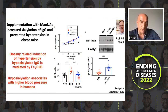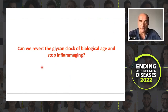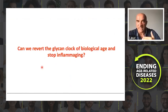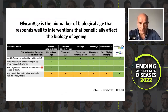In humans, we only have correlation data, which says that people with lower sialylation will have higher blood pressure. So the key question is: can we revert it? Can we make decisions to change our glycans, revert the clock, and stop inflammation? I think this is one of the key advantages of the glycan age clock compared to other currently available clocks — it does respond to intervention.